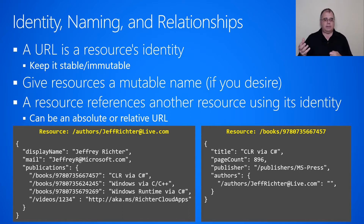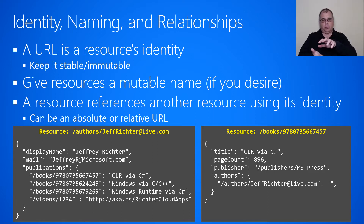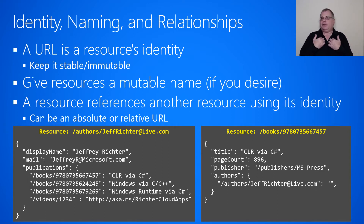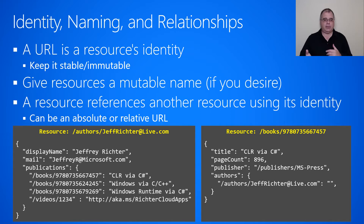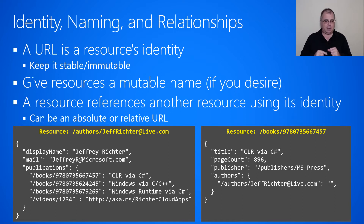In the authors collection, I have an ID for jeffrichter@live.com — that's the ID of this resource. Then in the resource payload, it has a display name of jeffryrichter, and that is a mutable property. Maybe I want to put my middle name in there someday, or make it jeff instead of jeffry. I'm allowed to do that, but I can never change the author/jeffrichter@live.com moniker.